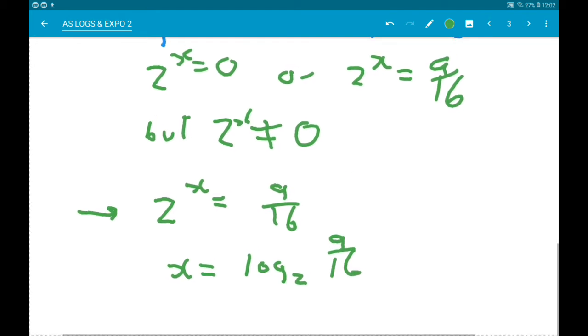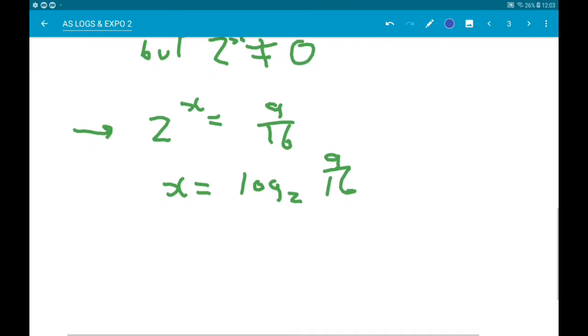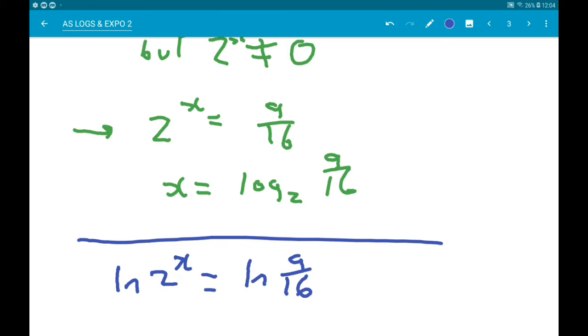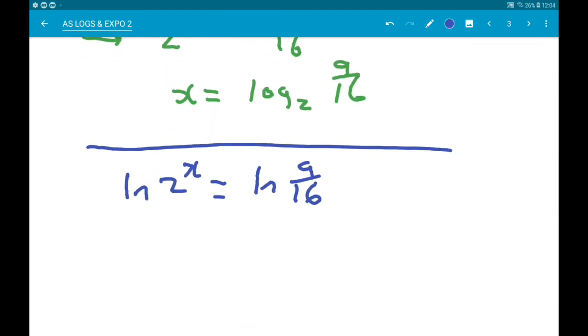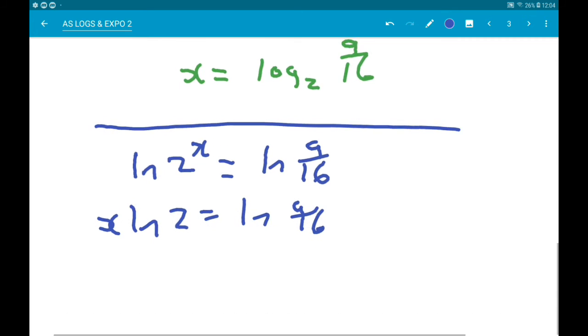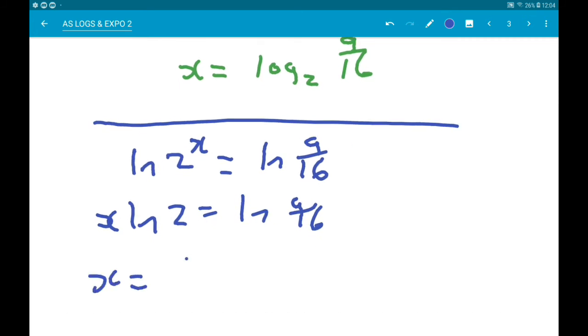Or if we used a different log, say we used the natural logarithm, we would get log 2 to the power x is equal to log of 9 sixteenths. Using the laws of logs, the left is x log 2, and that's log 9 sixteenths. And then divide by log 2. So x is log of 9 sixteenths over log 2, which is exactly the same as the answer above.